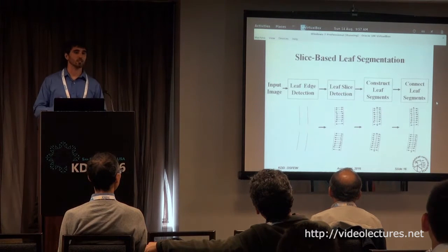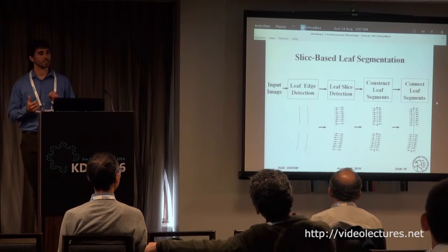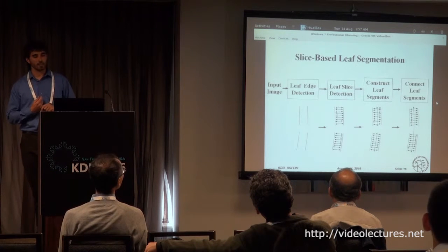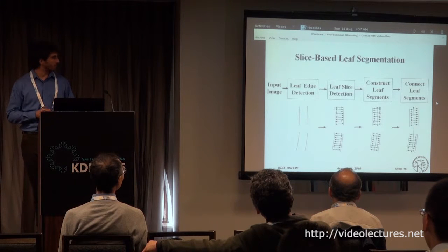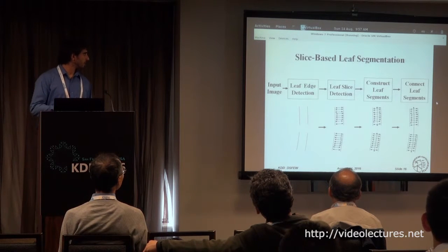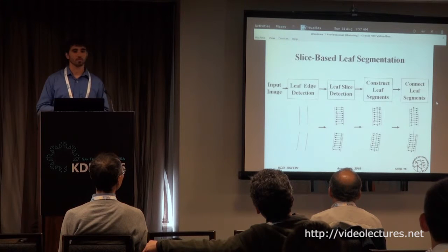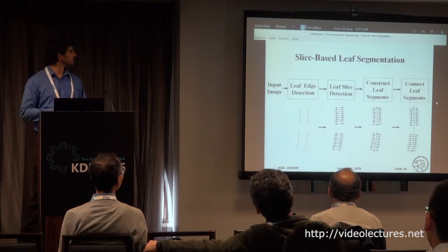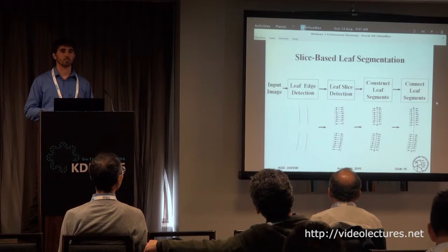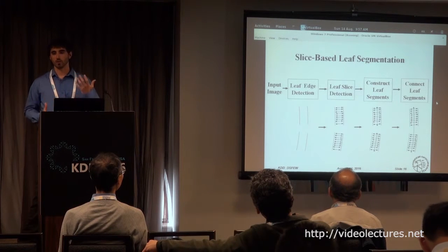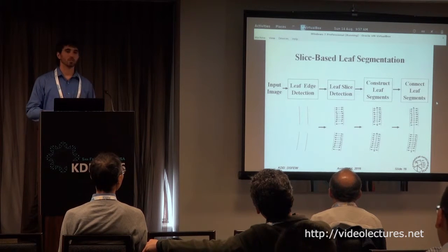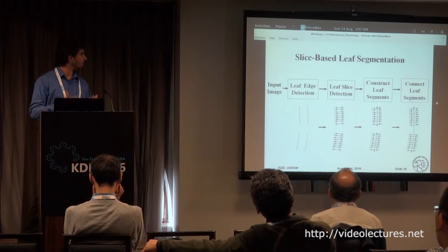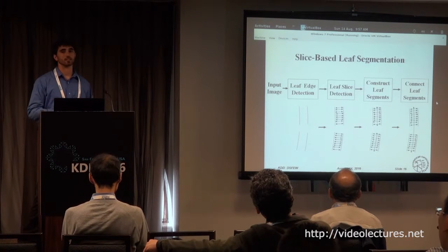But the leaf count — the number of leaves — is not enough. We also want to get estimates of leaf length, width, and color. To do that, we need to segment the leaves. So another method segments the leaves in the field. Ours is a bottom-up approach in which we try to reconstruct the leaves from their basic components until we get a final leaf segmentation.